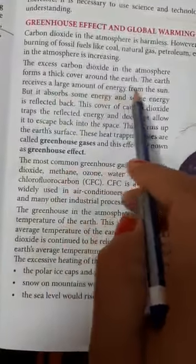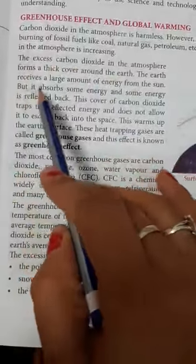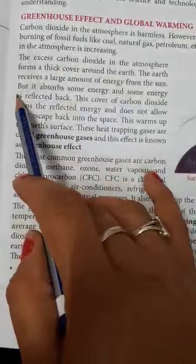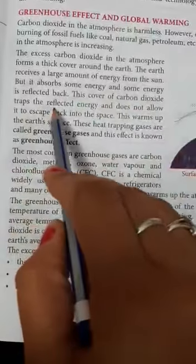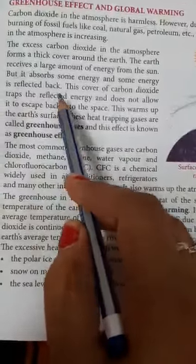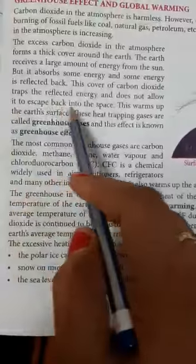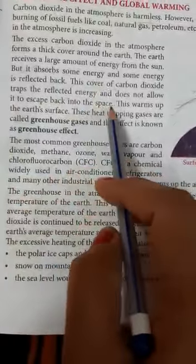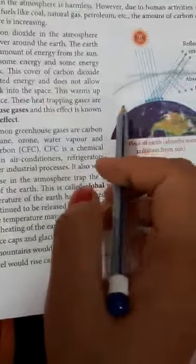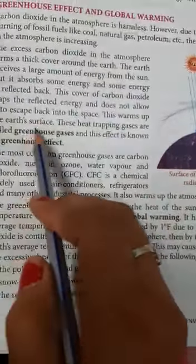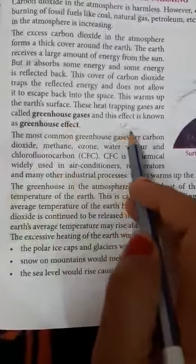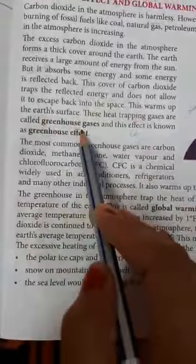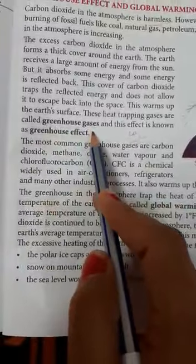The earth receives a large amount of energy from the sun — it absorbs some energy and some energy is reflected back. This cover of carbon dioxide traps the reflected energy; CO2 captures it and does not allow it to go back into space. This causes the earth's surface to warm up again significantly. These heat-trapping gases are called greenhouse gases — CO2 and other gases that absorb this heat are called greenhouse gases, and this effect is called the greenhouse effect.